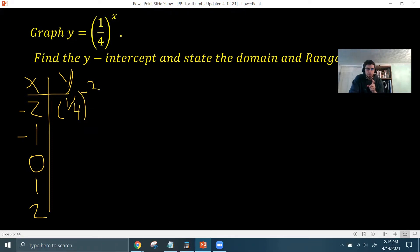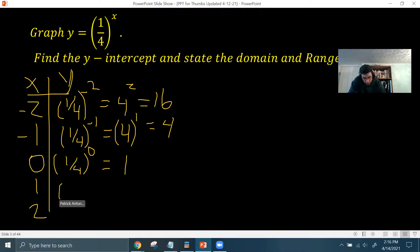So if I have (1/4) to the negative 2. Now, remember, with negative exponents, you can flip it, and it will make the exponent positive. So that's going to be the same as 4 squared, which is 16. If you have (1/4) to the negative 1, that's going to be the same as 4 over 1, or just 4 to the first power, which is 4. If you have (1/4) to the 0 power, then remember any non-zero number to the power of 0 is equal to 1. When x is 1, you have (1/4) to the 1, which is just 1/4. And then (1/4) squared, which you can think of two ways. When you square a fraction, you square the numerator and denominator, which would give you 1 over 16. Or you could think of it as multiplying two 1/4ths together. Either way, you'd get 1/16.